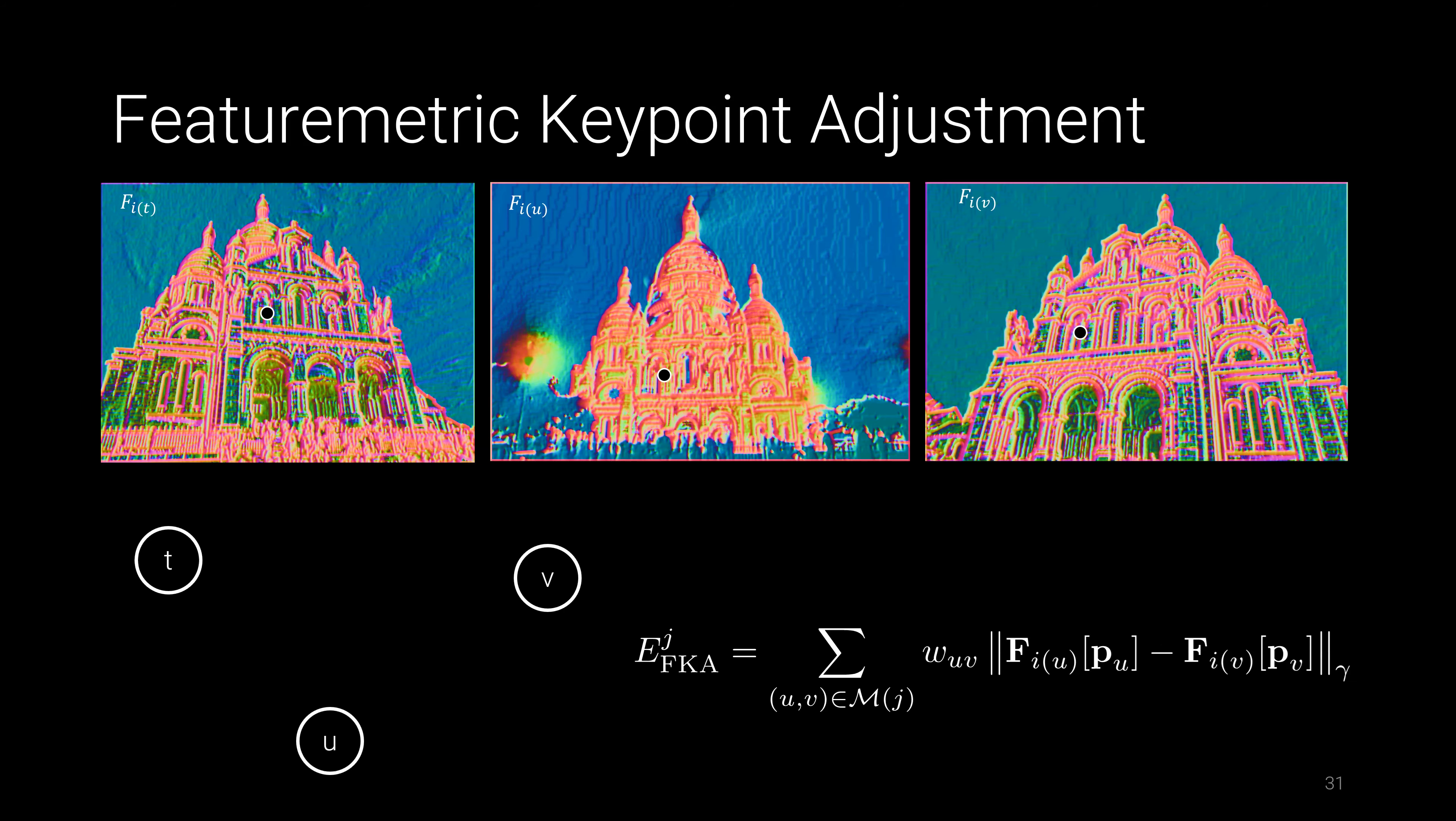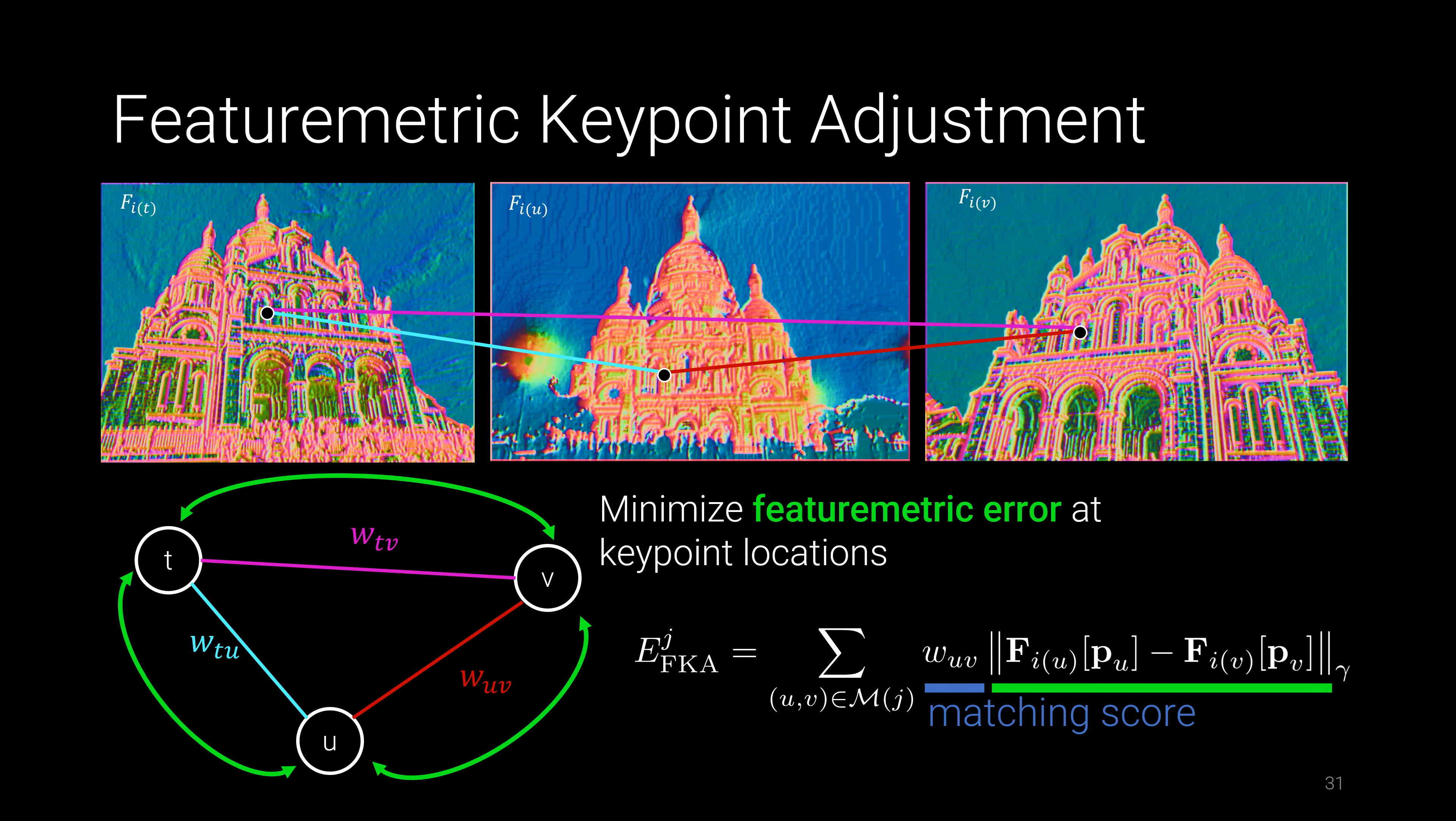The graph is then optimized by minimizing the featuremetric error along each edge, and we fix the keypoint with the highest aggregated matching score to avoid drift.